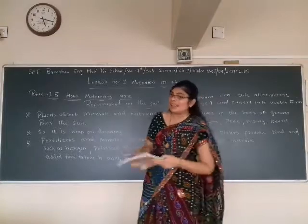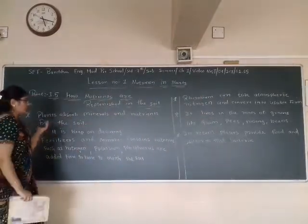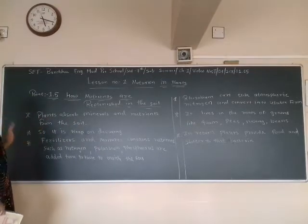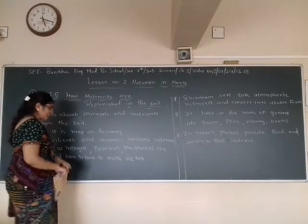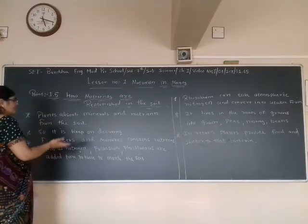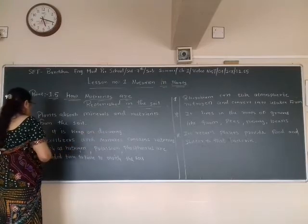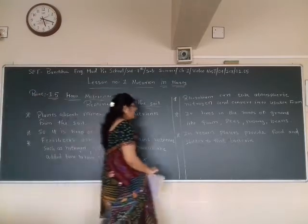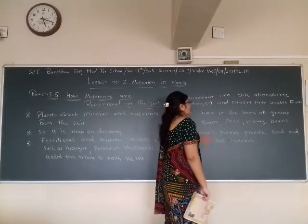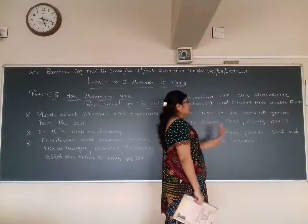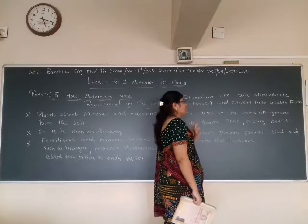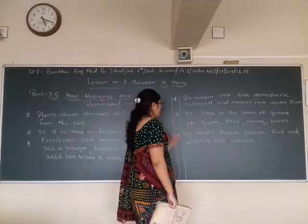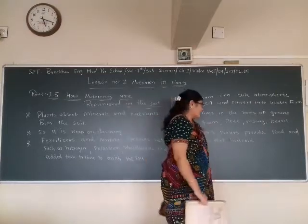Let us have a recap of this last point. Plants absorb nutrients from the soil, so the soil keeps deteriorating. Fertilizers and manures with nutrients such as nitrogen, phosphorus, and potassium are added to enrich the soil. Rhizobium bacteria can take atmospheric nitrogen and convert it into a usable form. It lives in the roots of legumes like moong beans and gram, and in return, the plants provide food and shelter to the bacteria.